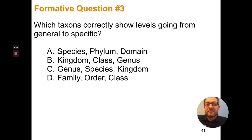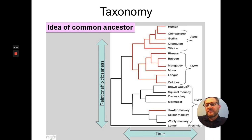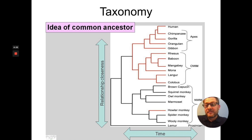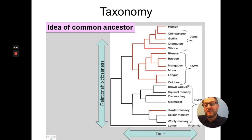Which taxons correctly show the levels going from general to specific? The system of taxonomy allows us to build evolutionary trees like Darwin talked about in his writings. This particular tree here is showing the evolutionary history of primates. Humans fall into the primate family. The closest living relative to humans today is the chimpanzee. Now that's not to say that humans evolved from chimpanzees — it's just that if we travel back in time far enough, you're going to find a common ancestor that both humans and chimpanzees share.